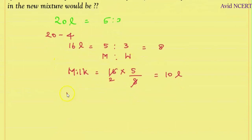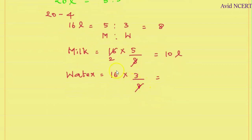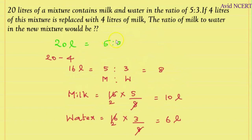Now we find the quantity of water in this mixture. The quantity of water equals the total mixture of 16 liters times the part of water (3) divided by the total parts (8). So 16 divided by 8 is 2, and 2 times 3 is 6. Therefore, there are 6 liters of water in the remaining mixture.